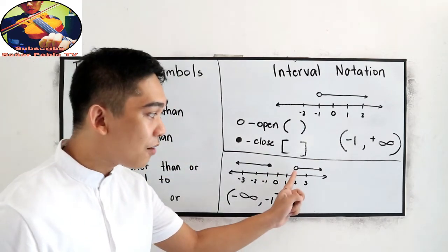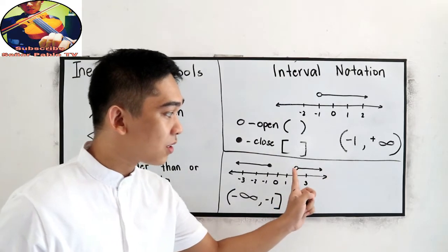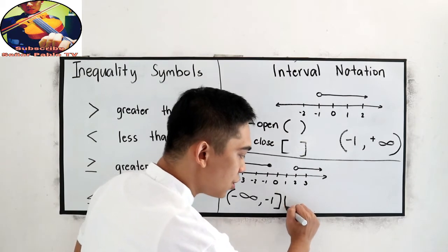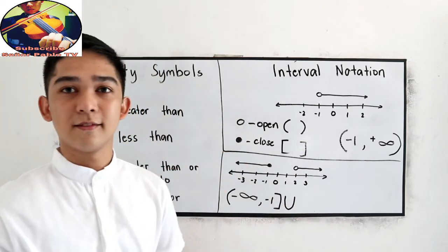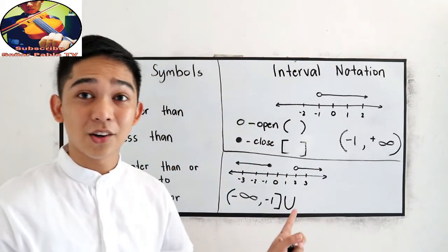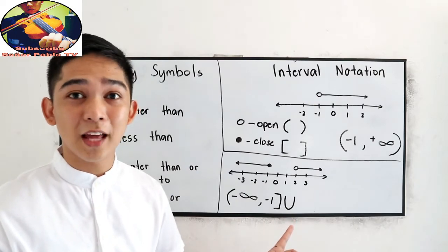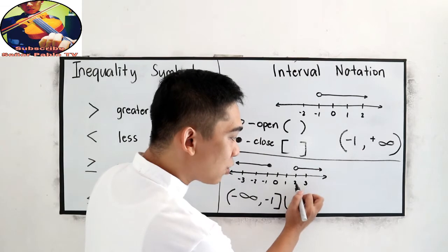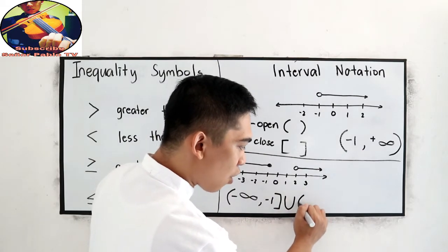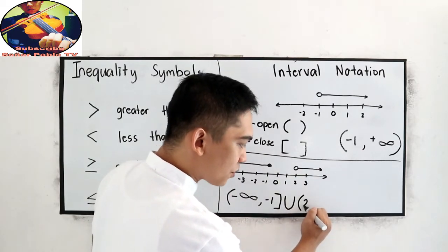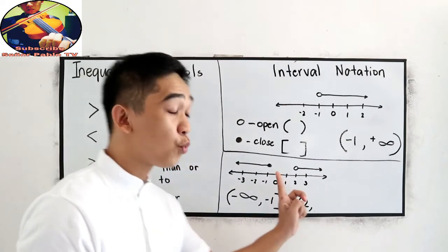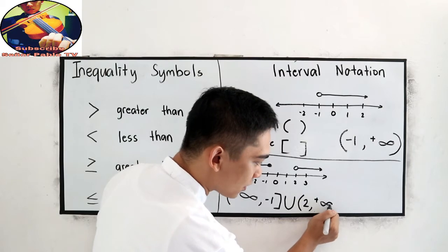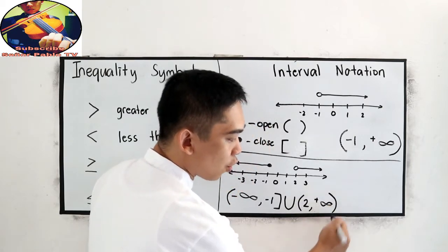We have another answer on the positive side, so we're going to use union. Open at positive 2 — that means positive 2 is not included — then going to positive infinity, which is also open.